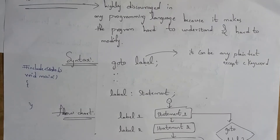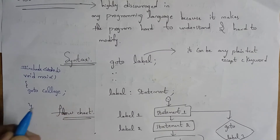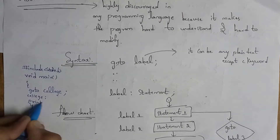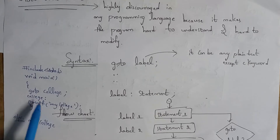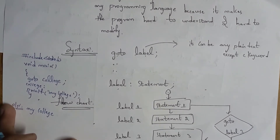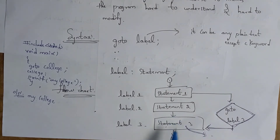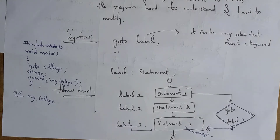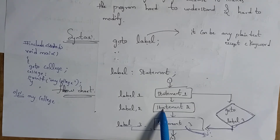Here is a program for the goto statement. You write 'goto college' — here I am giving the label name as 'college', followed by a semicolon. Then you write the label definition: 'college:' followed by a statement. Here I written printf("my college"). By writing this program the output will be 'my college'. I given goto with label 'college', and that label contains the statement 'my college', so the output is 'my college'. This is the flowchart for the goto statement.